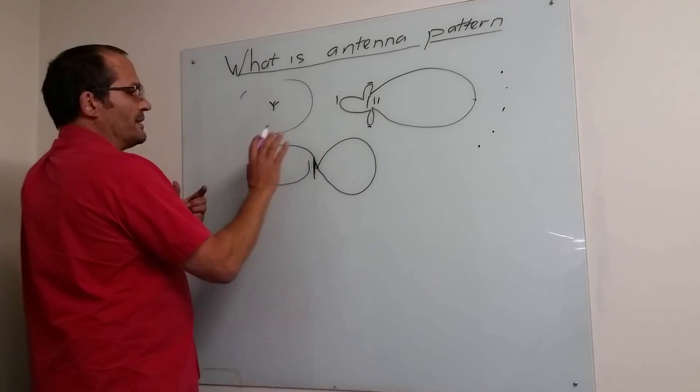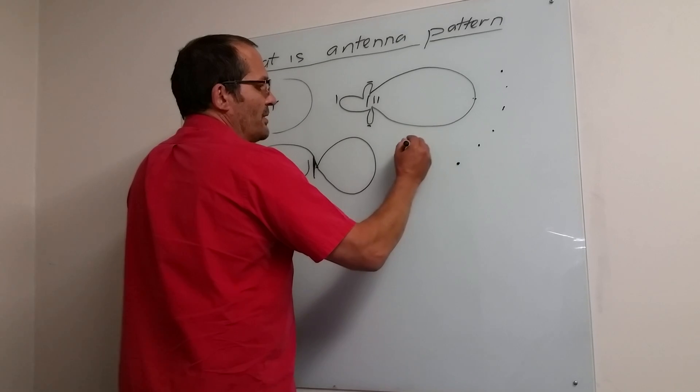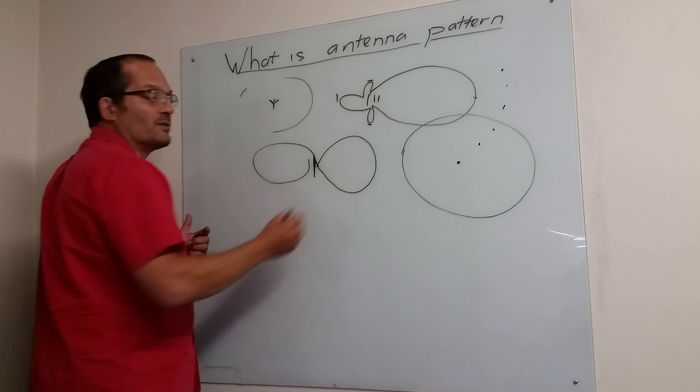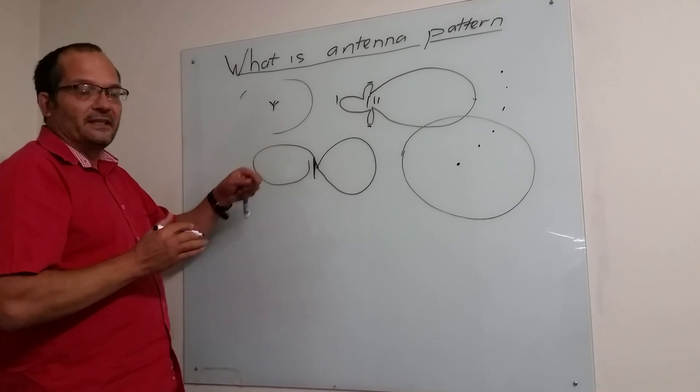And what it actually is is a doughnut. In other words, if you look at it from the top, if you look at the same thing from the top, it radiates equally well in azimuth. That's why it's called omnidirectional, but you can see that doesn't mean it radiates in all directions.